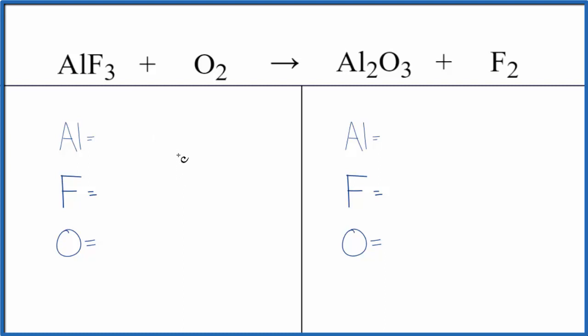Let's balance the equation. First, we need to count the atoms up. Probably best to start with the aluminum here because we could put a 2 as our coefficient, 1 times 2. That would balance the aluminum atoms, 3 times 2. That would give us 6 fluorines.